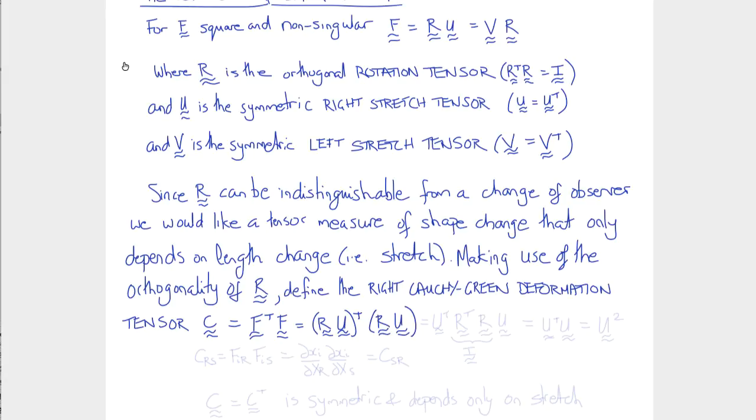And recall that the transpose of a product is the product of the transposes, but in the opposite order. So that gives us U transpose R transpose R U. But R transpose R is I, the identity tensor, which leaves us U transpose U. And since U is symmetric, that would be the same as U squared for short.